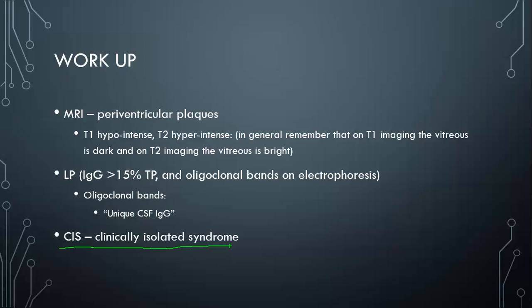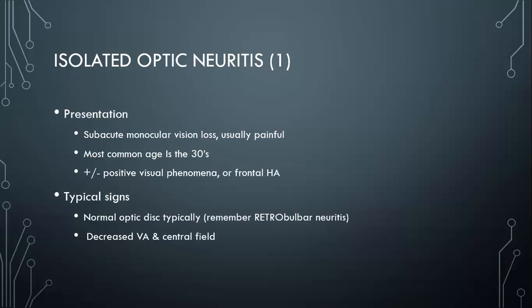Now moving on to isolated optic neuritis. The way this presents is subacute monocular vision loss — that's the buzzword that makes you think about optic neuritis. It's typically painful and, like MS, a disease of young people in their thirties. It can be associated with positive visual phenomena like flashes of light and a frontal headache, but those aren't necessary. Subacute monocular vision loss, especially in a young person, should really make you concerned about optic neuritis.